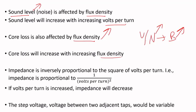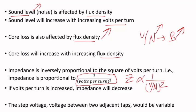Impedance is inversely proportional to the square of volts per turn — the transformer impedance is proportional to 1 over (volts per turn)². So if volts per turn increases, impedance will decrease significantly. This is important to keep in mind especially for paralleling transformers and other applications. Also, as you change taps with an LTC, you'll have a step voltage between adjacent taps, so that step voltage will also be variable.